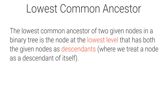Let's see how to find the lowest common ancestor in a binary search tree. First of all, let's define what the lowest common ancestor means. The lowest common ancestor of two given nodes in a binary tree is the node at the lowest level that has both the given nodes as descendants, where we treat a node as a descendant of itself.